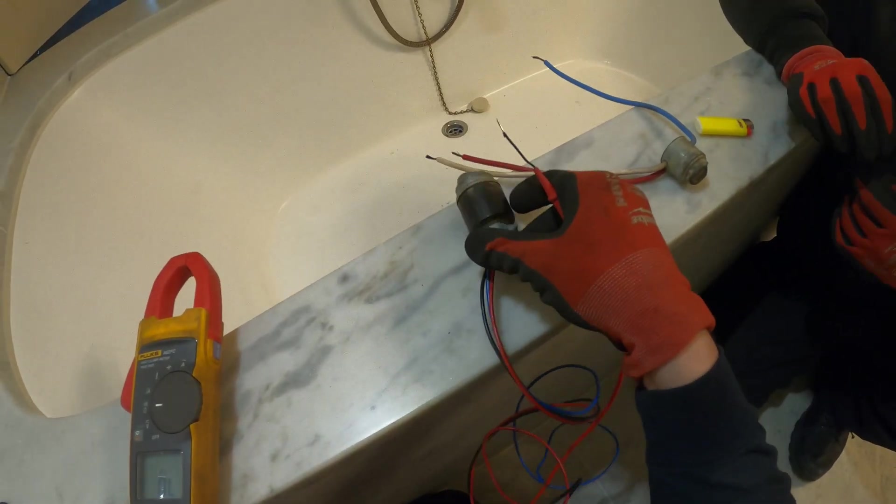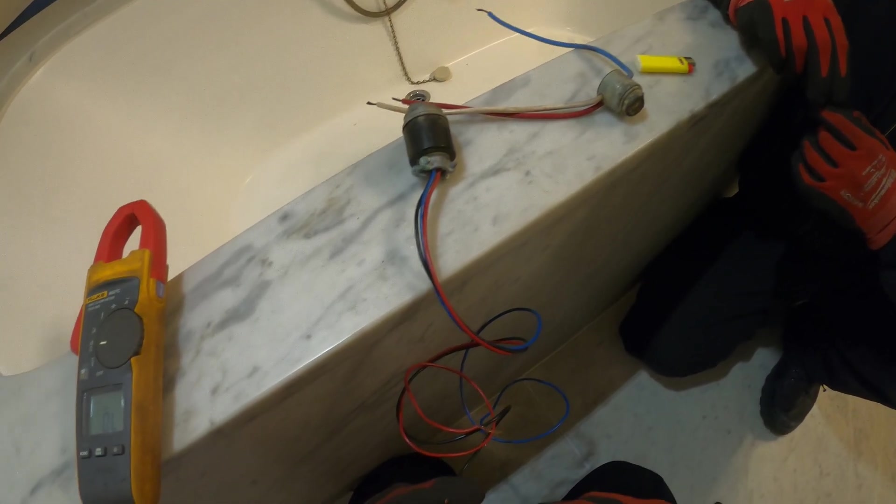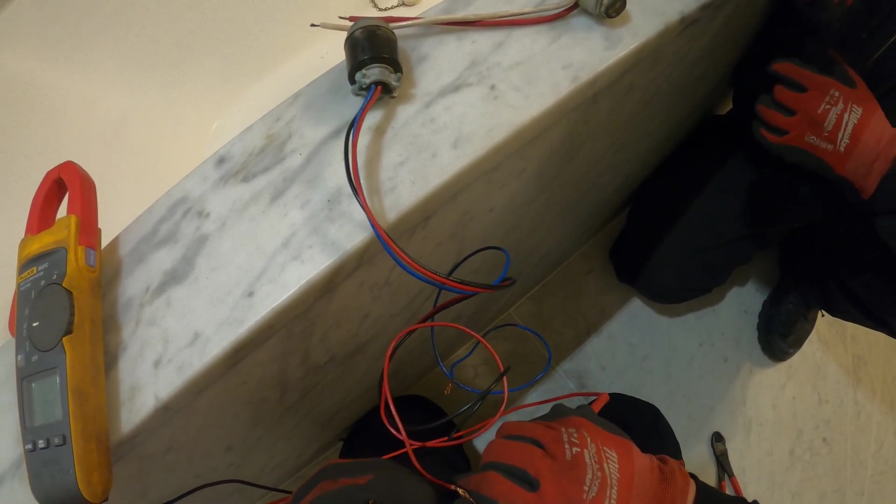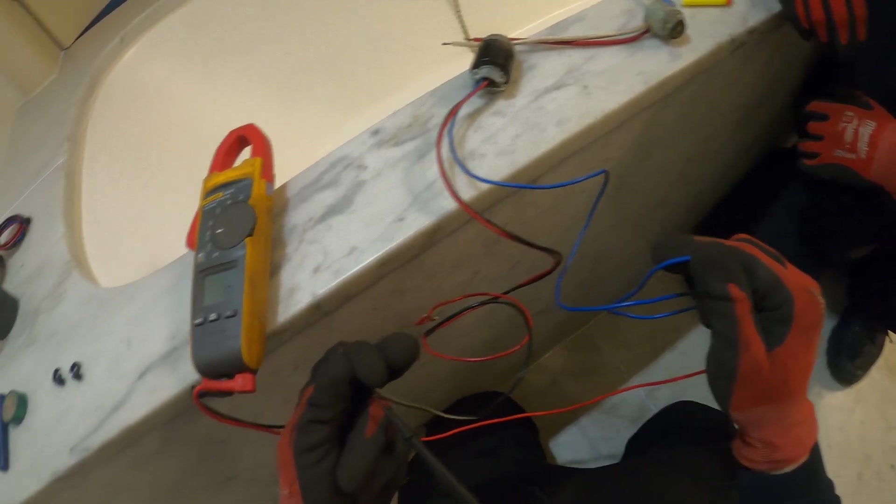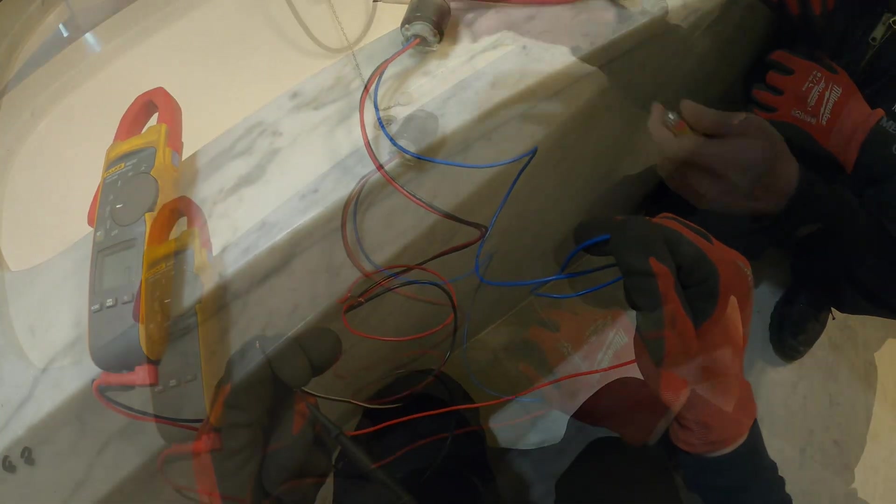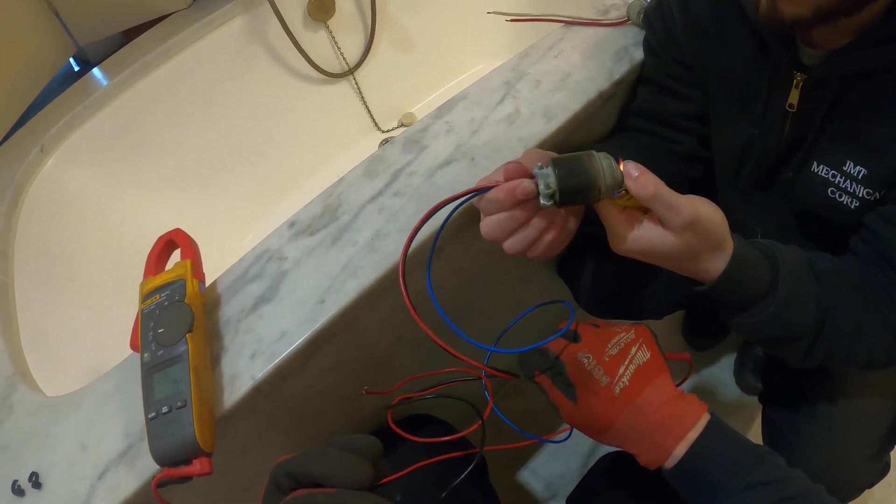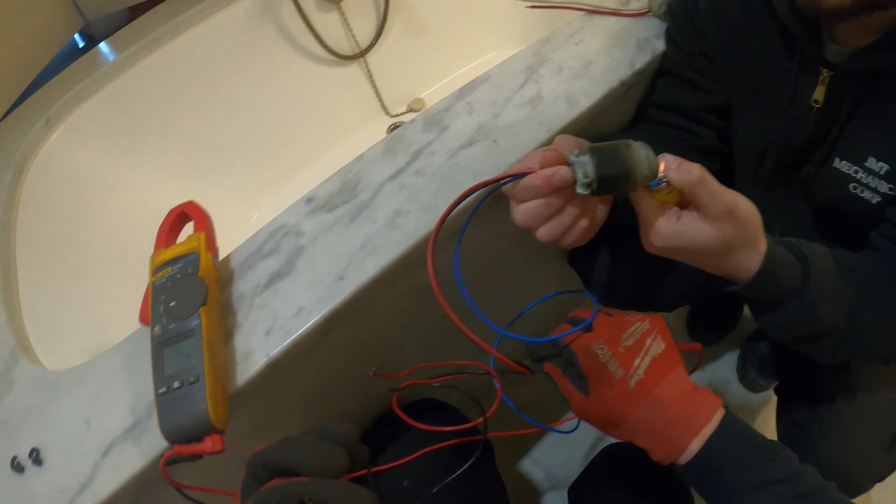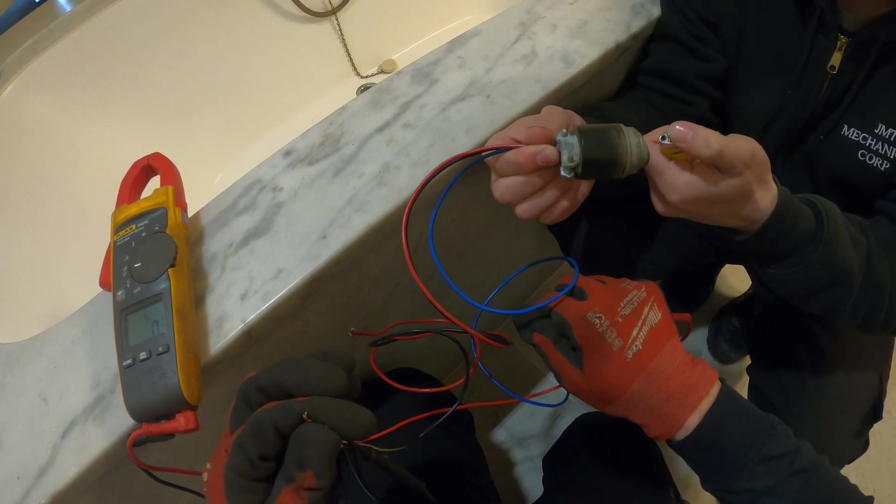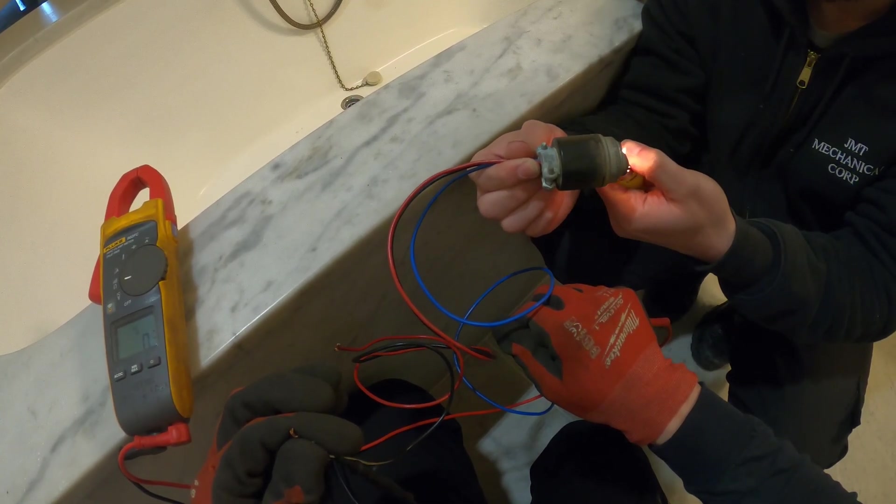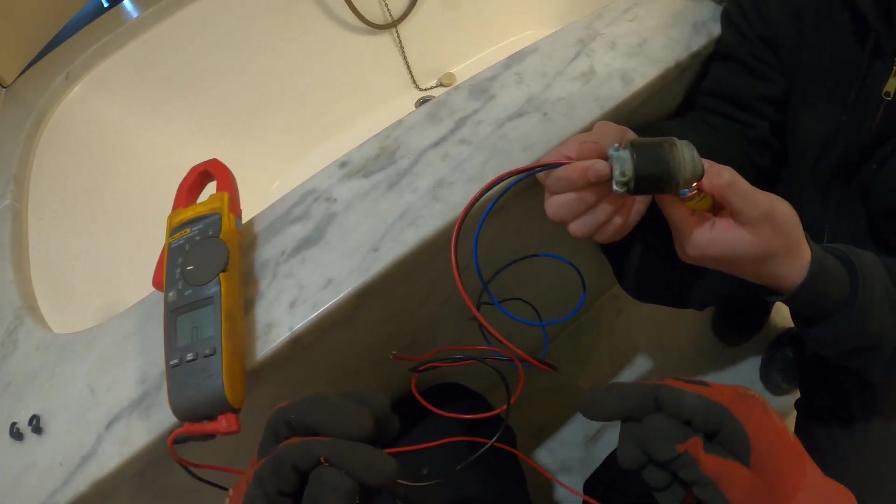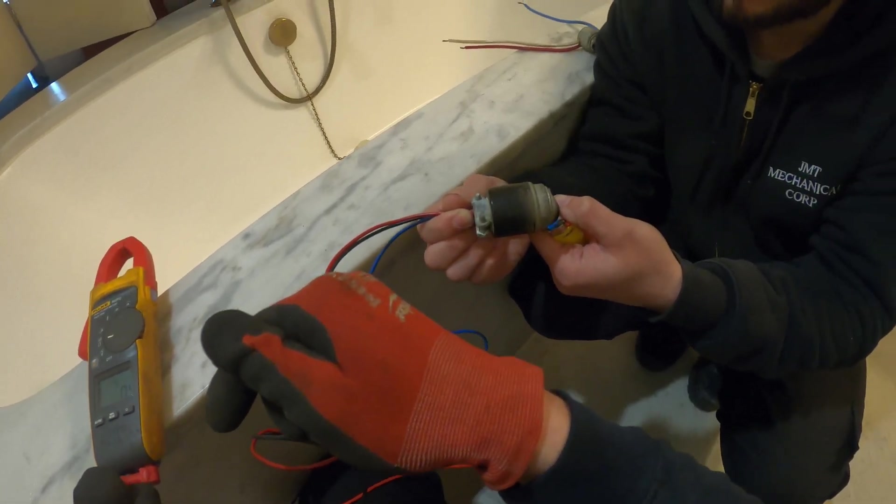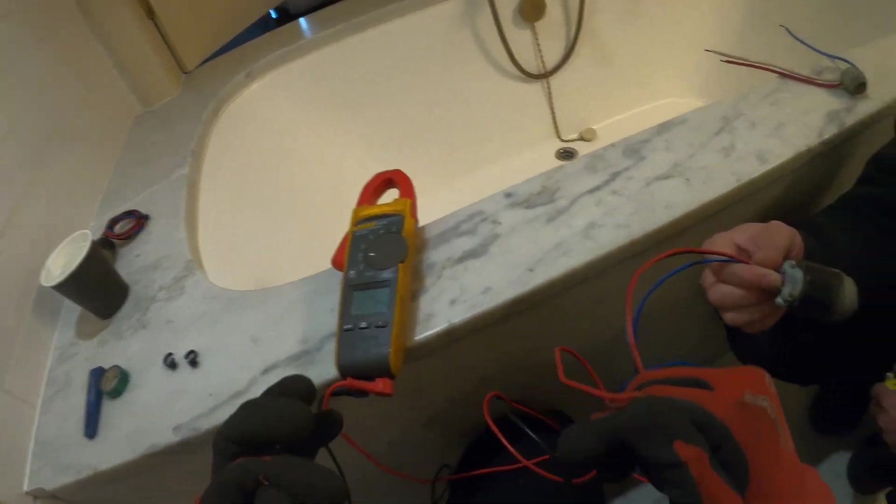I'm just going to run a similar test to this one. I want to see how this works too. Got black, red, and blue. I think black is common. It's seeing black and blue. We have continuity. Let's heat that thing up and see if we lose it. Let's heat this thing up. Let's see if we switch contacts. Still beeping. It's hot. Right there. You see we lost continuity. Now let's check between black and red. See, now we have continuity here. That's the way this works.